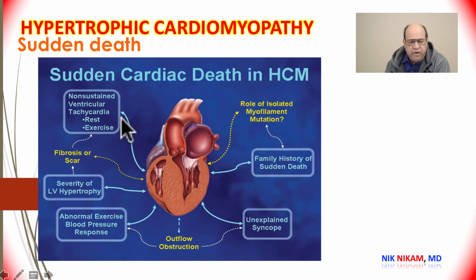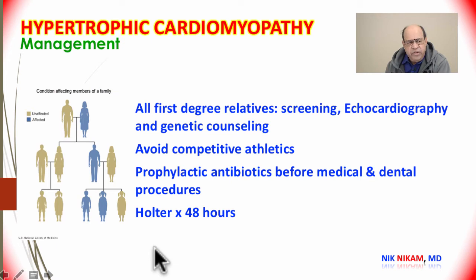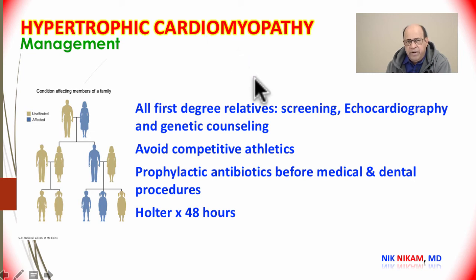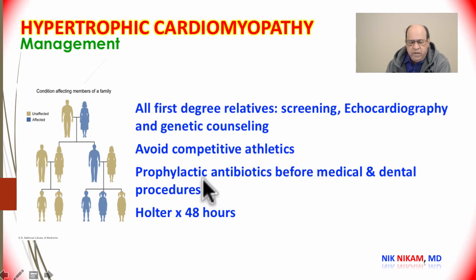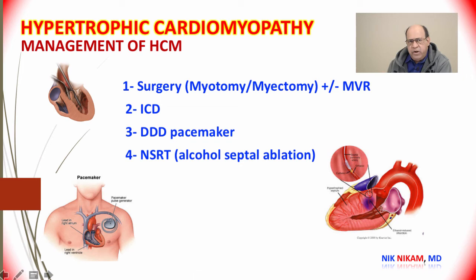Causes of sudden death in hypertrophic cardiomyopathy include ventricular arrhythmias, abnormal blood pressure response to exercise, or familial factors. Because of the seriousness of arrhythmias and sudden death, all first-degree relatives of a patient with HCM should undergo complete cardiovascular evaluation including echocardiography and genetic counseling. They should avoid competitive athletic sports, take antibiotic prophylaxis before medical or dental procedures, and a 24–48 hour Holter monitor may reveal arrhythmias not seen on a routine ECG.